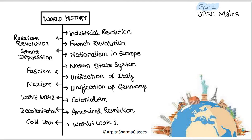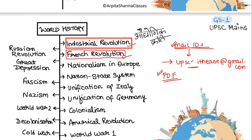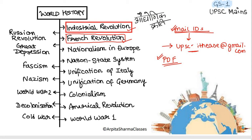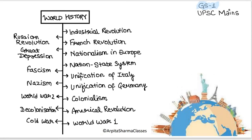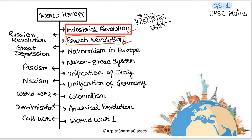The index of this course covers the industrial revolution, French revolution, and all the important revolutions and events in world history. So far in the batch we have covered the first two topics: the industrial revolution and the French revolution. Today as part of this demo lecture, I am going to summarize the industrial revolution and solve a question that came in 2019 in GS Paper 1 mains.